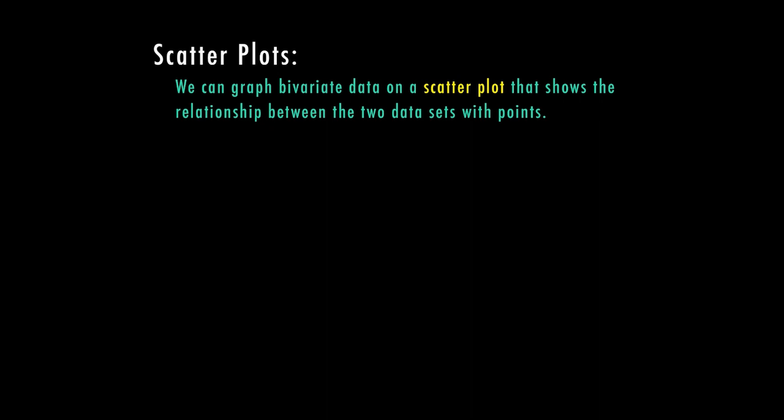We can graph bivariate data on a scatter plot that shows the relationship between the two data sets with points. If you can't remember, we did discuss bivariate data in another video. You can find that linked below. But bivariate data is when we have two paired variables that we are comparing, and they have some sort of a relationship. So we're going to see what those relationships mean.